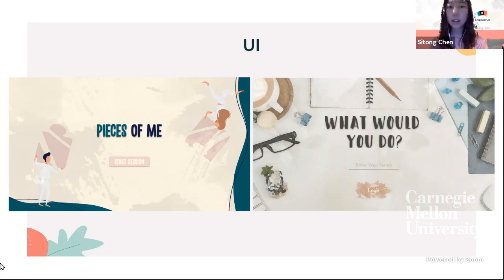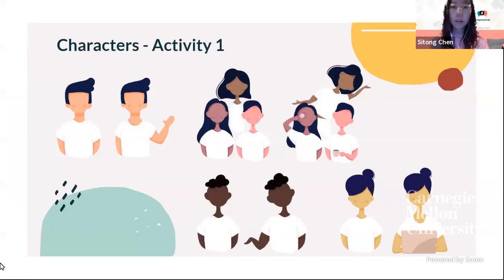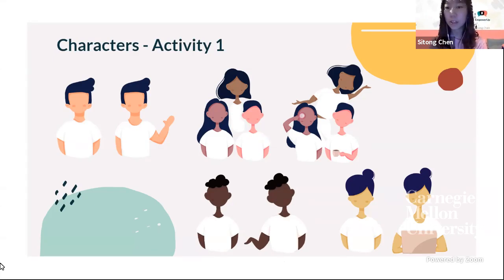A strong iteration we made was to improve gameplay by changing the font to be more readable for participants. For activity one, 'Pieces of Me,' we have different characters for each prompt. To make the characters more inclusive, they don't have too many identifying features such as facial features, body shape differences, or other identifying aspects. They all wear the same white t-shirts, so they are equally ambiguous.